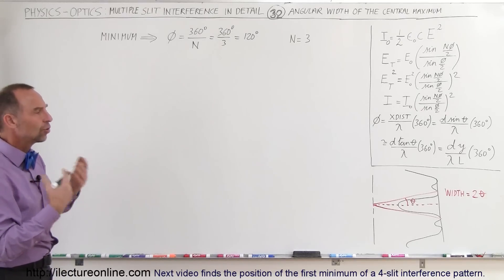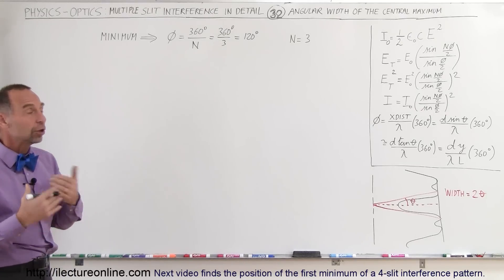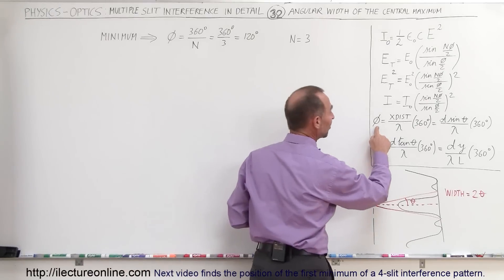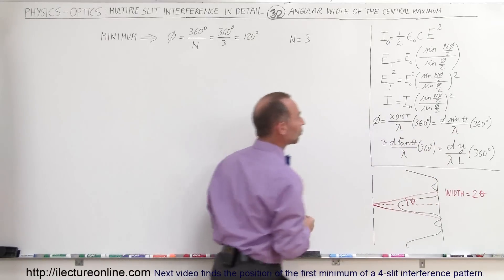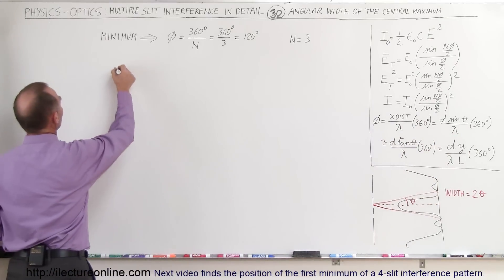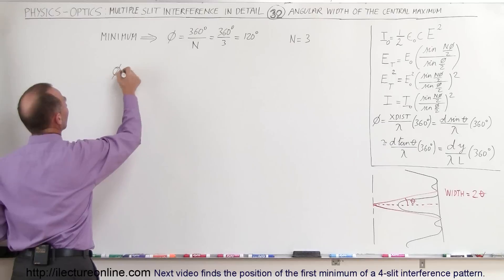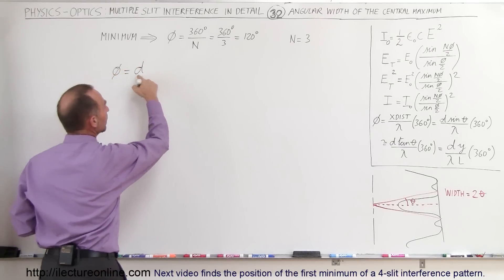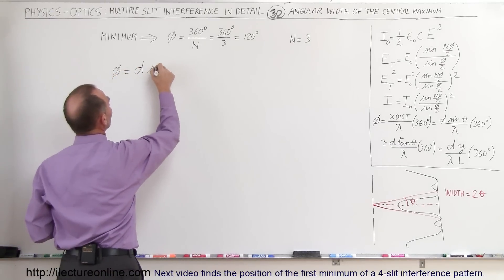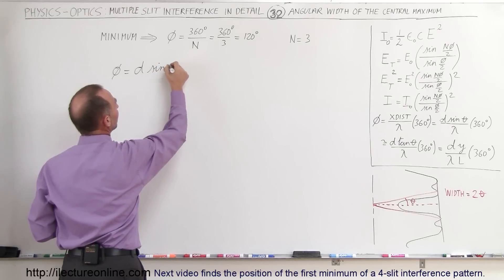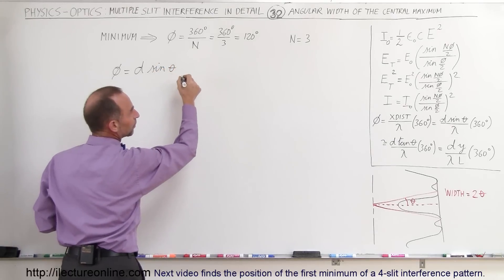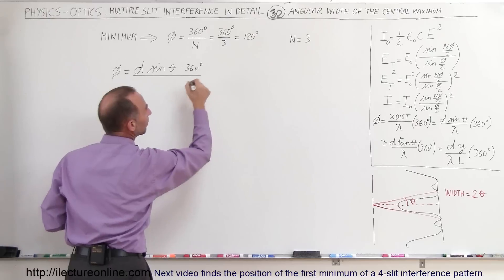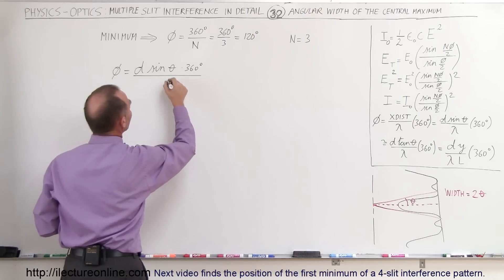So how do we associate that with the lookup angle? Well, here we have a relationship between the phase angle and the lookup angle. So let's write that down: the phase difference is equal to the distance between the slits D times the sine of the angle theta, times 360 degrees divided by lambda.